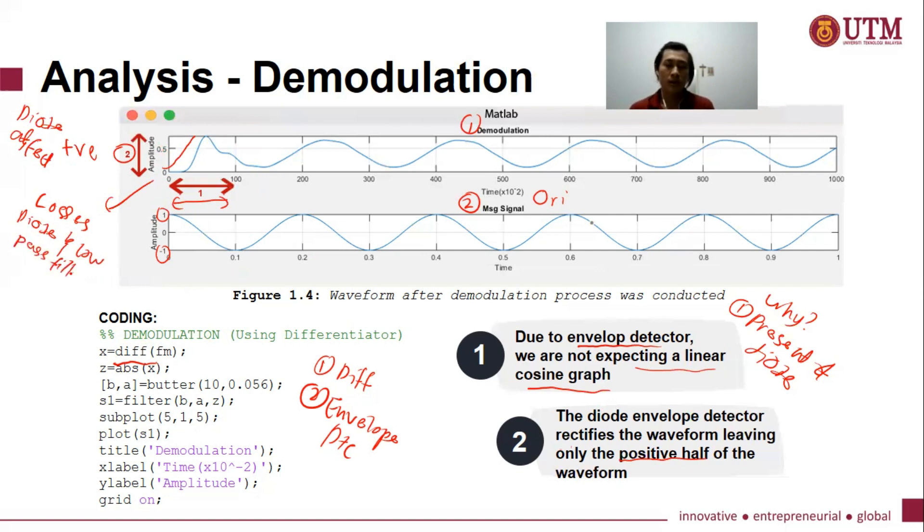So that is why in a real physical simulation, we need to use an amplifier. So what is the use of an amplifier? Amplifier will help us to maximize the output signal of the waveform. So we will be having a value of one, which is the same as the message signal.